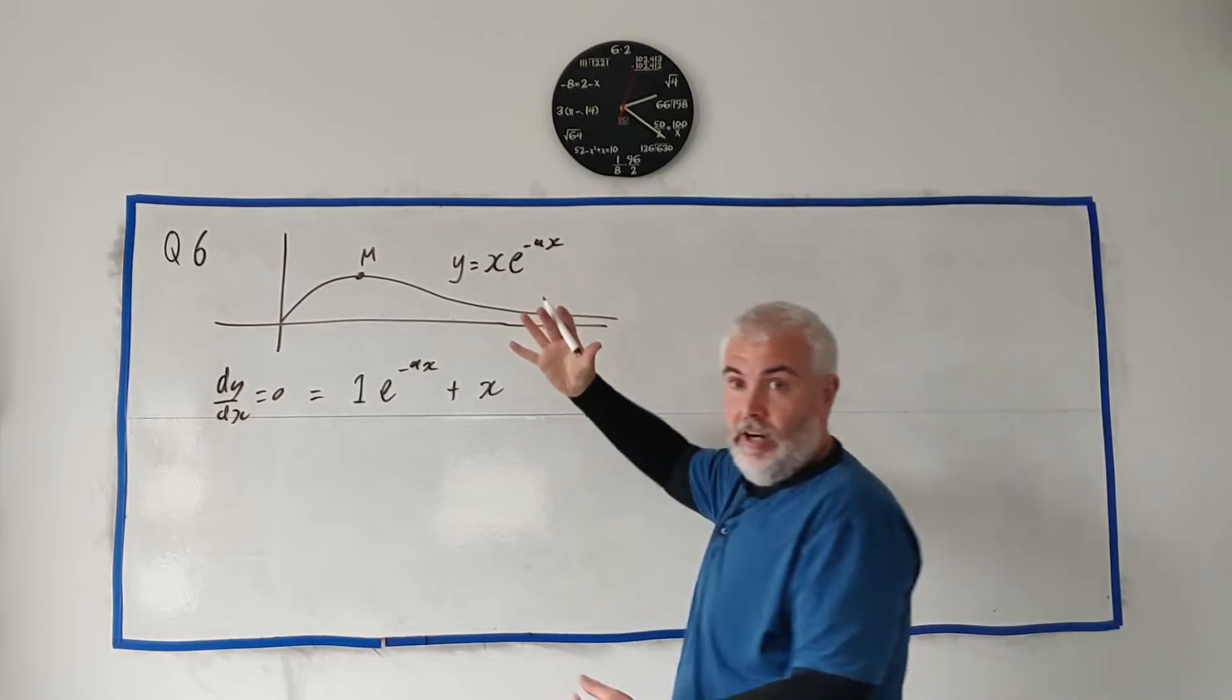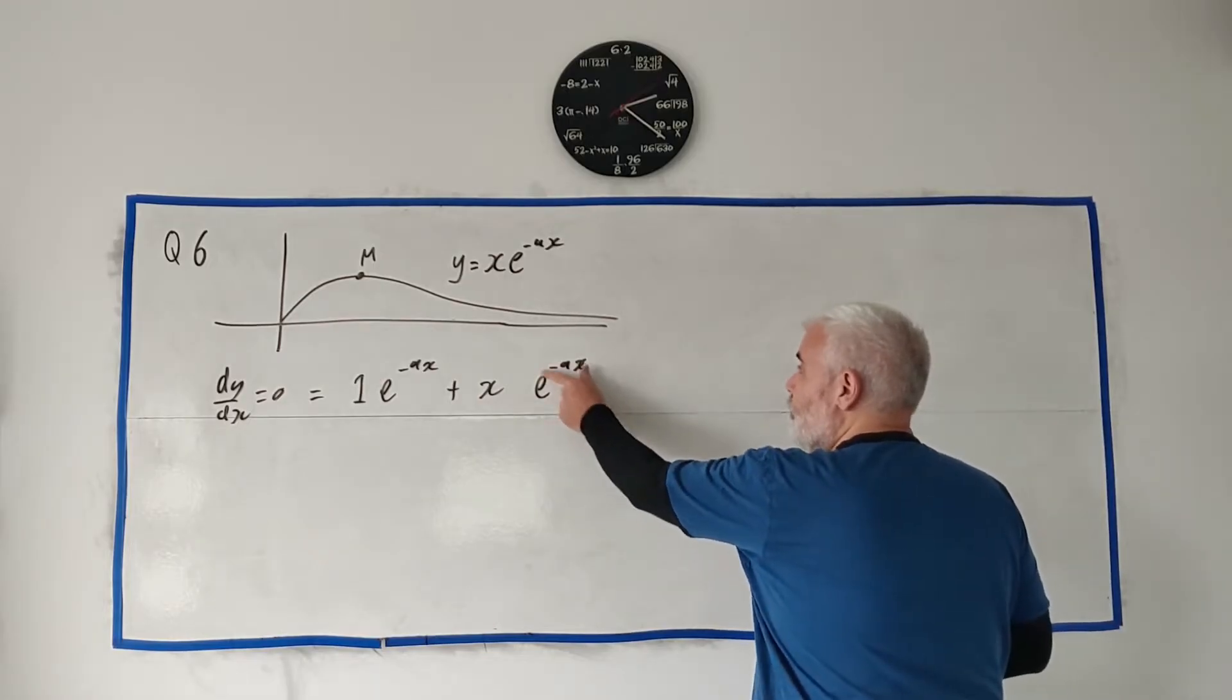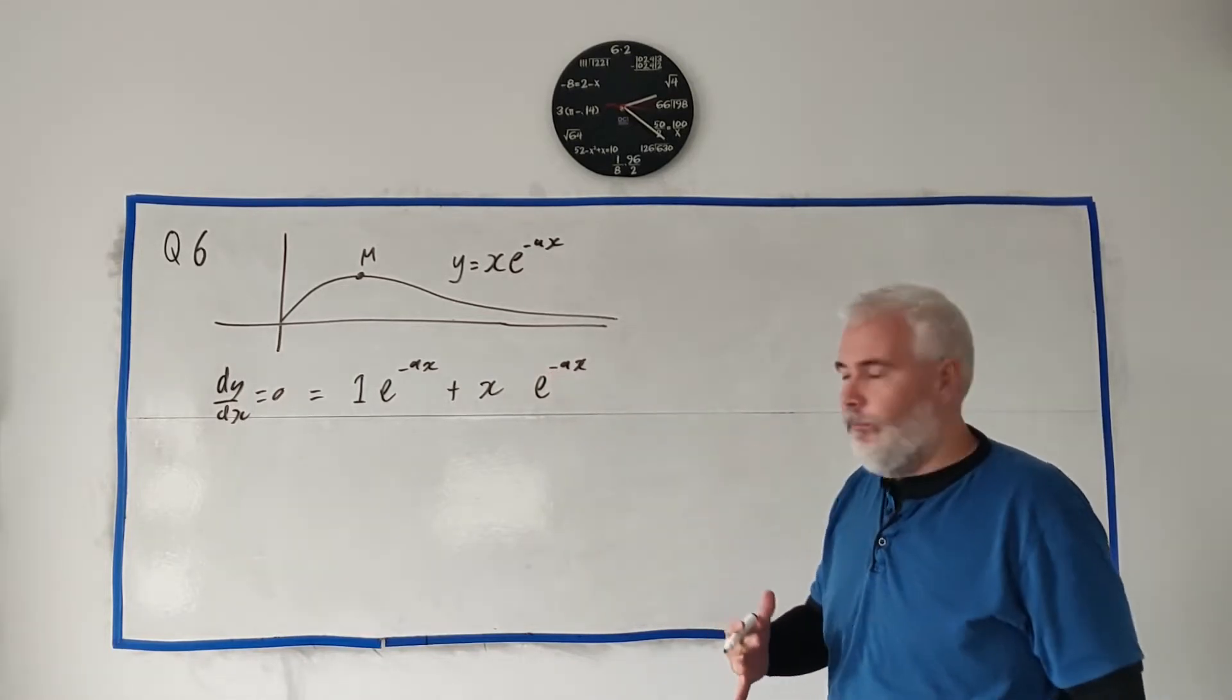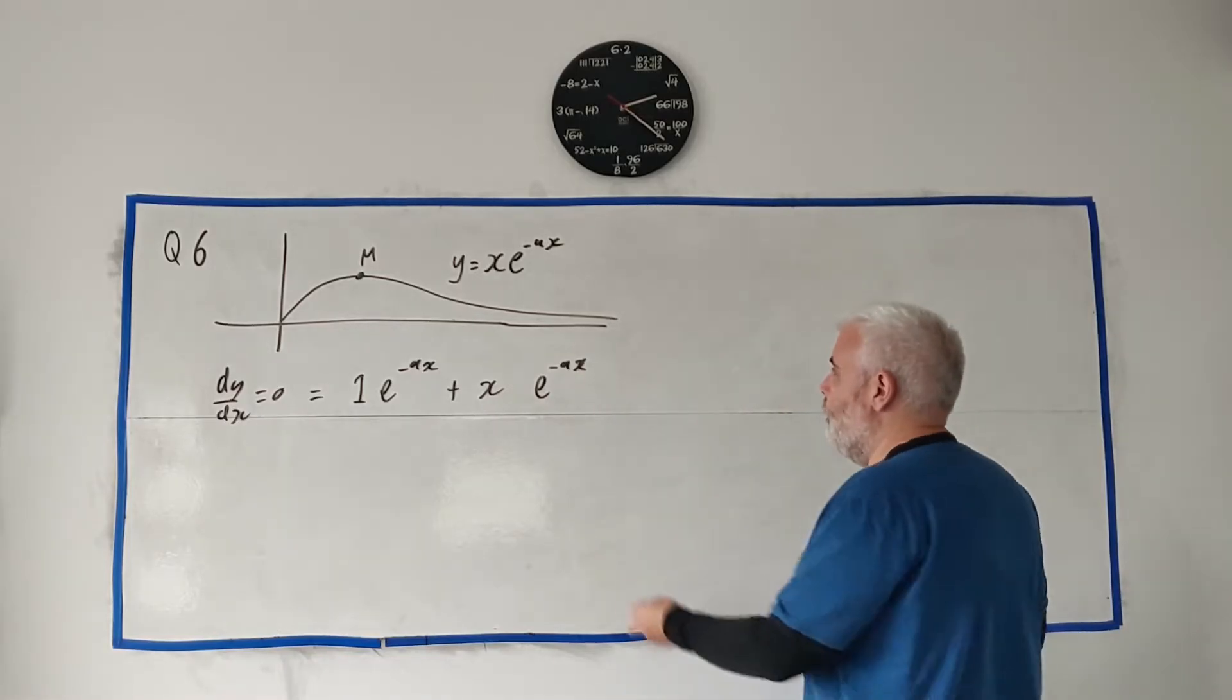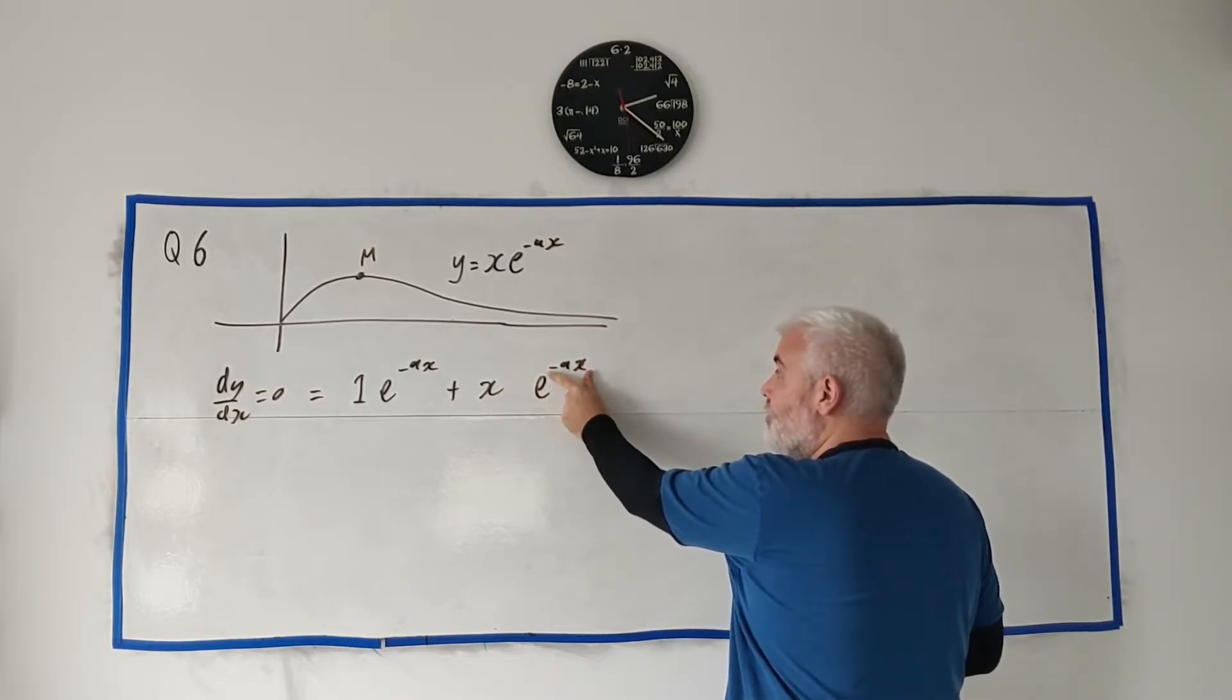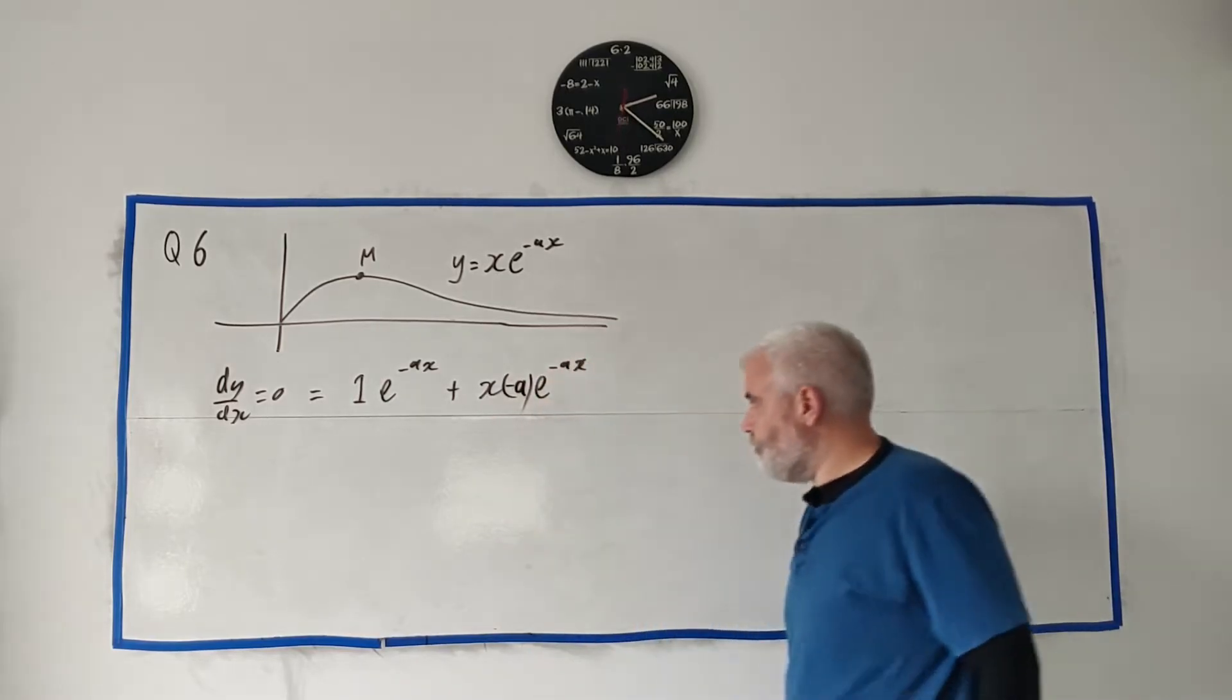Then leave the first one alone, x, and differentiate the second. How do we differentiate e to the power of anything? Well, it doesn't change for the most part, unless there's something complicated up here. And there is, it's not just x. So when there's something complicated, we have to use the chain rule.